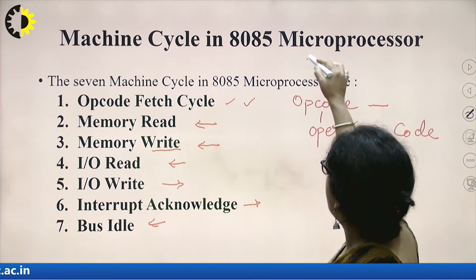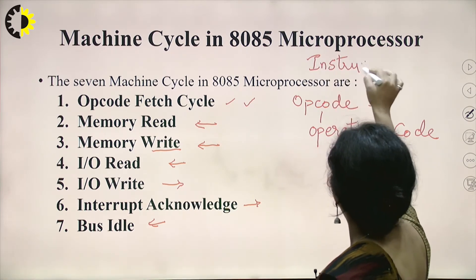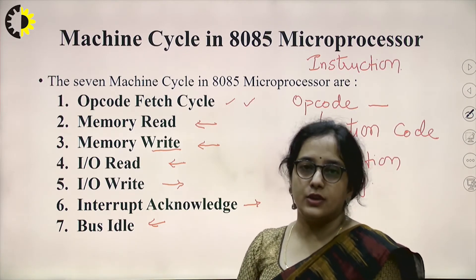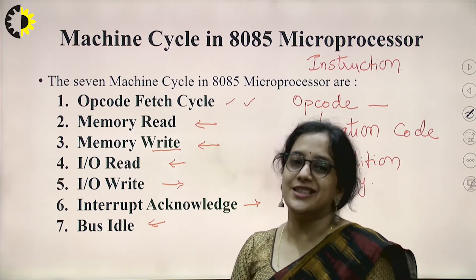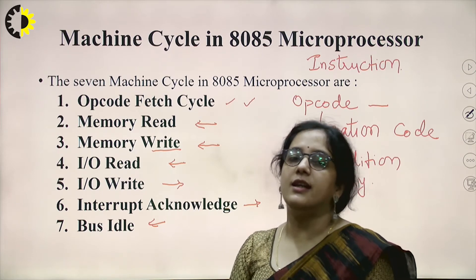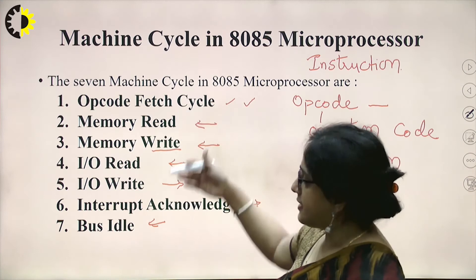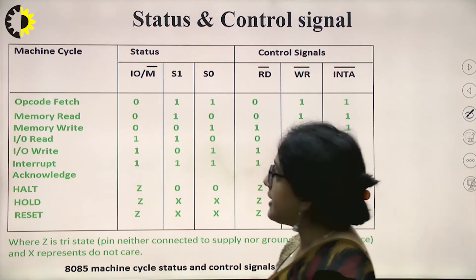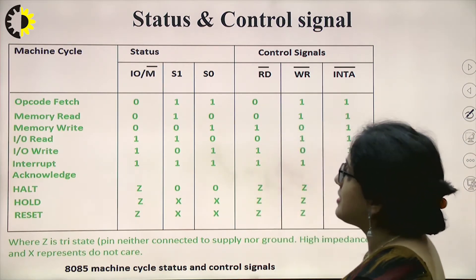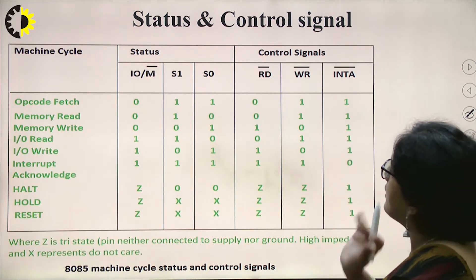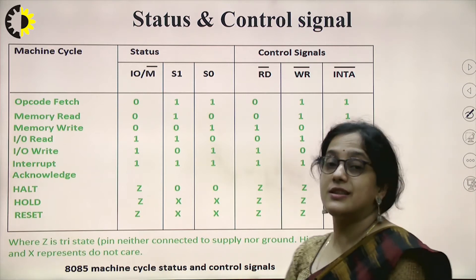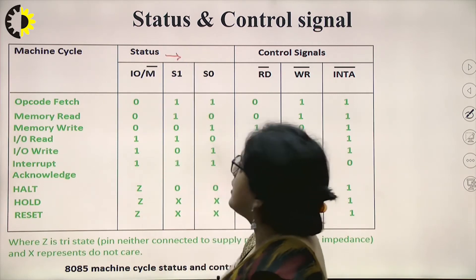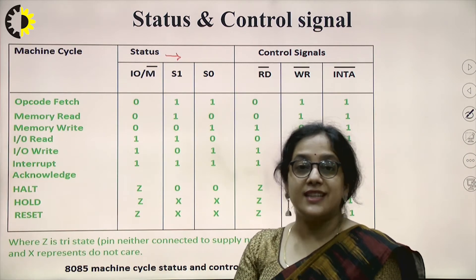Whenever we give an instruction to the microprocessor, that instruction needs some time to be executed. The time taken by the microprocessor to execute that instruction is called the instruction cycle, and each instruction cycle is composed of many machine cycles — those seven machine cycles we just discussed. Before going into the detail of opcode fetch, memory read, and the other machine cycles, we will have a general description of the status and control signals that are generated. These status signals give the user or programmer the status of the microprocessor.